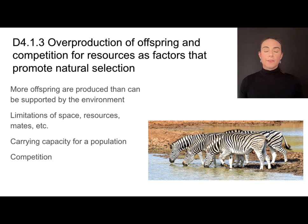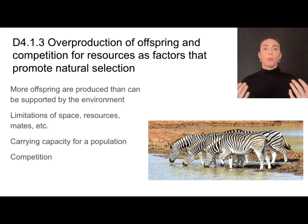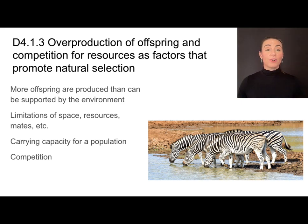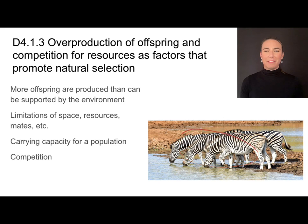Overproduction of offspring is also a requirement for natural selection. Overproduction means that more offspring are produced than will ever be supported by the environment — more than will survive to reproductive age to pass along their own genes. This means there is real competition for resources, referred to as intraspecific competition, which is competition within a species. This could be because of limitations for space, resources, or mating availability, and these are the things that determine the carrying capacity for a population.